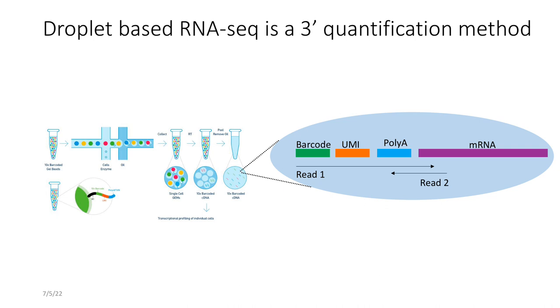But one thing I do want to emphasize that is overlooked is that droplet-based RNA-seq is a three-prime quantification method. What that means is if you were to actually look at the sequence that you get from an Illumina machine, you'd be able to trace back the barcode and UMI and therefore figure out exactly which cell each molecule comes from, but you wouldn't exactly be able to figure out the entire sequence of the gene because it's only sequencing the three-prime end.